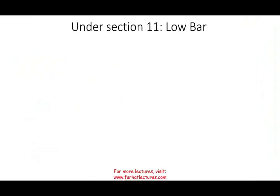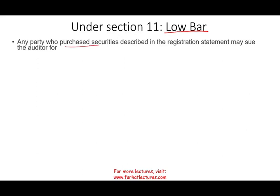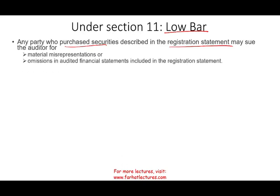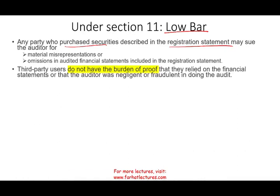Under Section 11, it's a low bar for the plaintiff. Any party who purchased shares from the IPO may sue the auditor for a material misstatement or omission in the audited financial statements. Third parties don't have to prove that they relied on the financial statements — as long as the financial statements were materially misstated or contained an omission, they win, whether they relied on them or not.